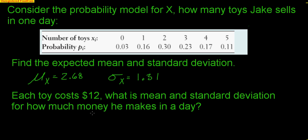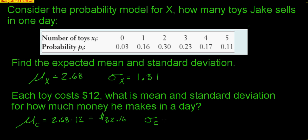Now here's where I'm going to do some converting, because each toy costs $12. What is the mean and standard deviation for how much money he makes in a day? This is really easy. The expected cost is just 2.68 t-shirts times $12, which gives $32.16. I could do the same for the standard deviation: take 1.31 t-shirts and multiply by $12, and 1.31 times 12 is $15.72.